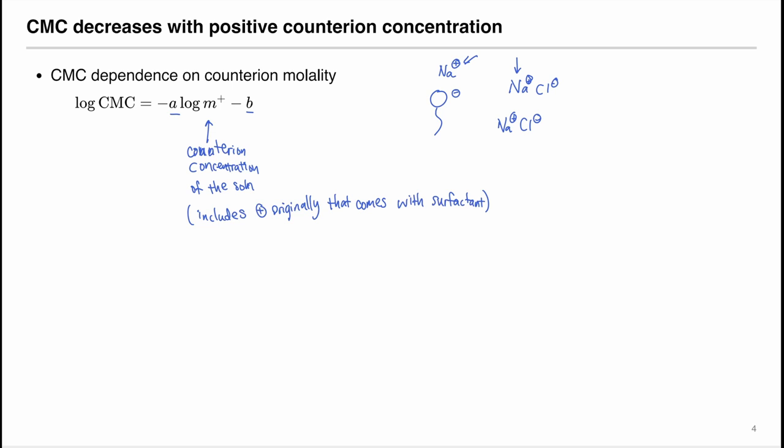So we can graph a curve so that on the y-axis, we have the log of CMC that we can determine. And the log of the counterion concentration we can determine. So we should expect that since A and B are positive constants, it should have a negative slope.